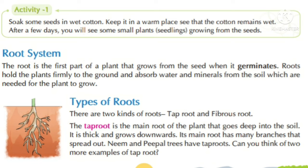Now types of roots. There are two kinds of roots: tap root and fibrous root. The tap root is the main root of the plant that grows deep into the soil. It is thick and grows downwards. Its main root has many branches that spread out. Neem and peepal trees have tap roots. Can you think of two more examples of tap root?